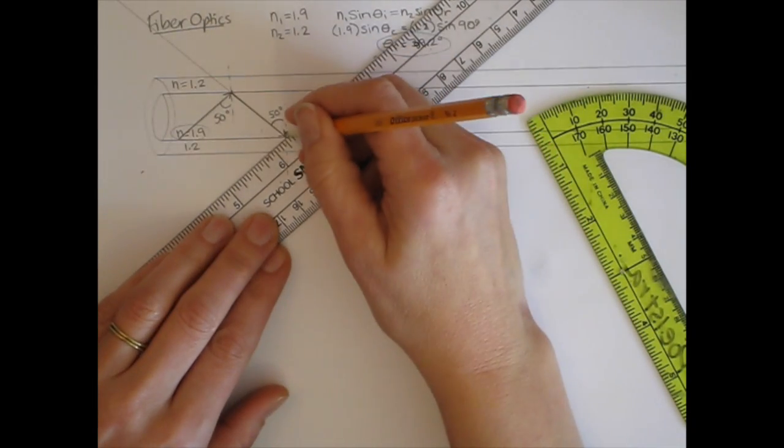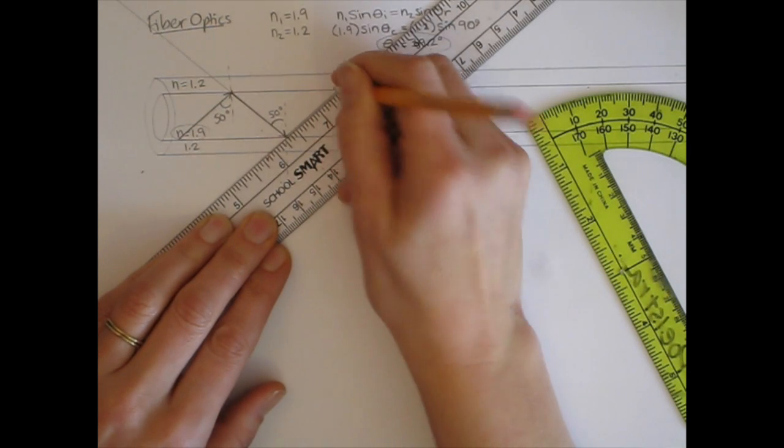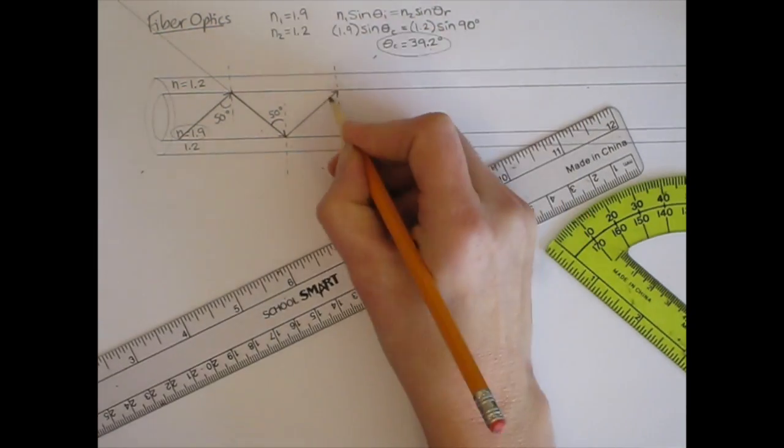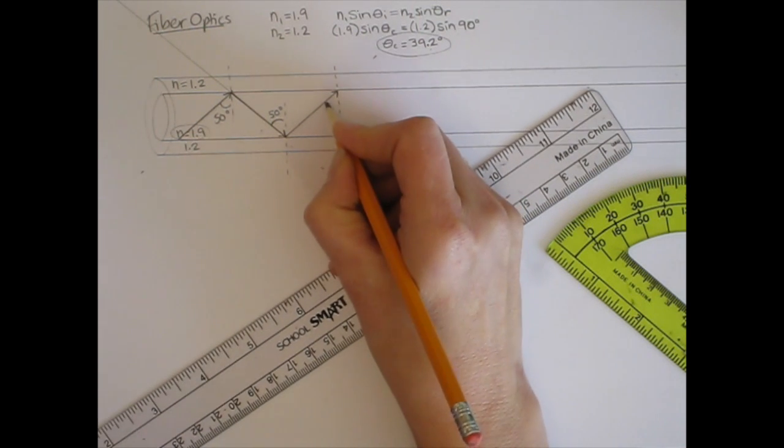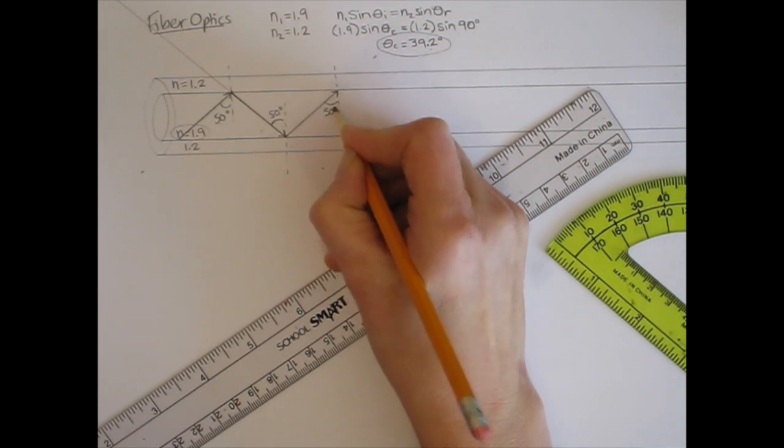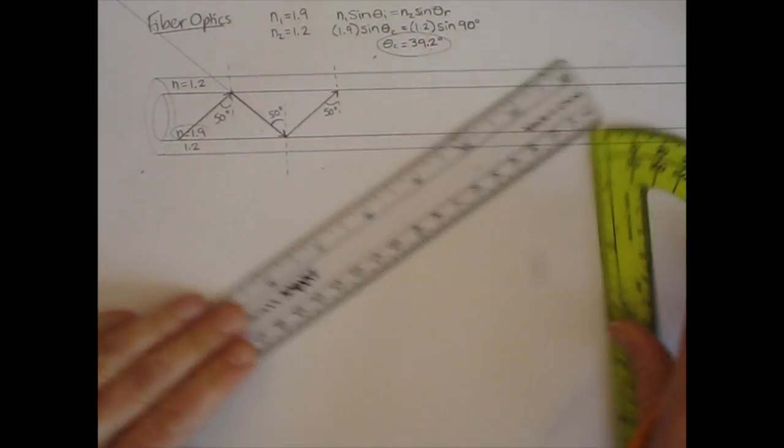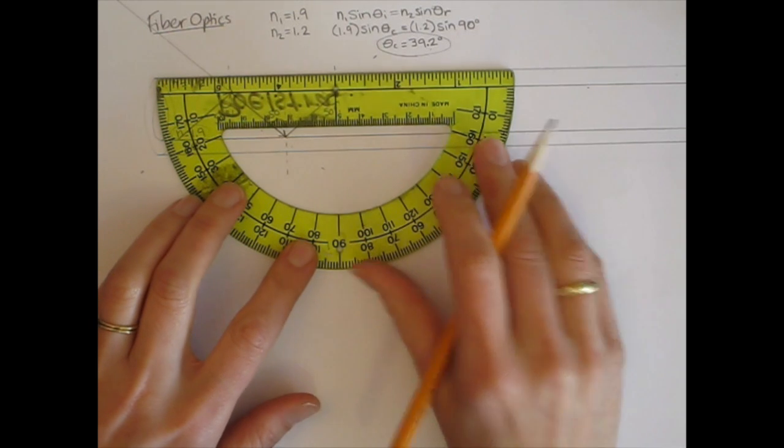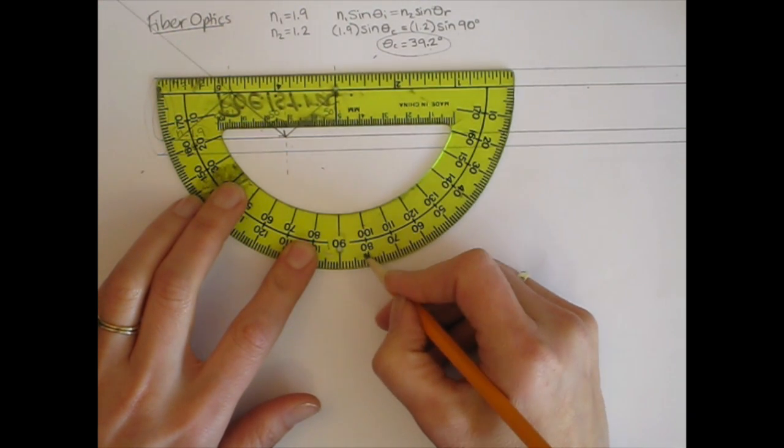So here is the reflected light ray. And you can draw the normal. Now we're hitting a boundary again. What's going to happen here? Well, the incident angle is still 50 degrees. And so you end up with this light ray that just bounces back and forth, staying inside the core and not refracting out.